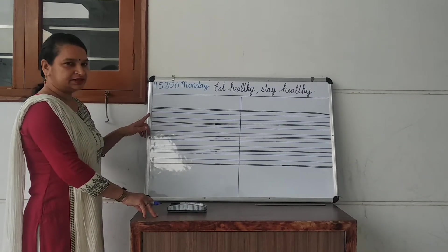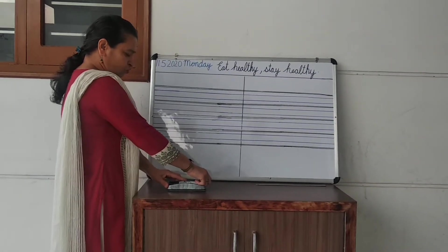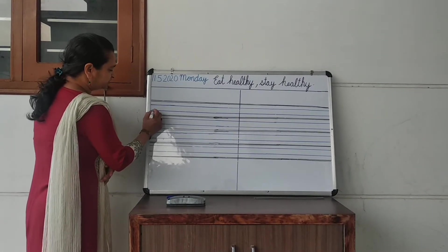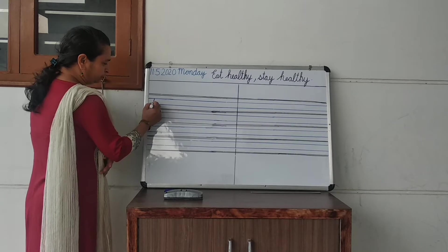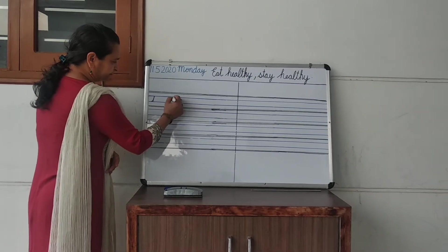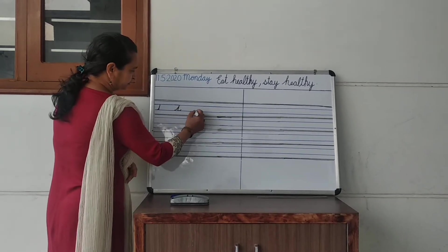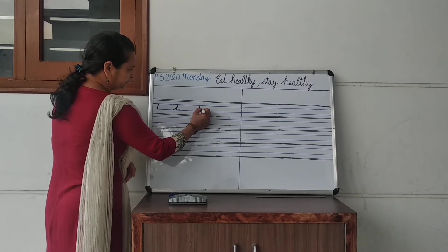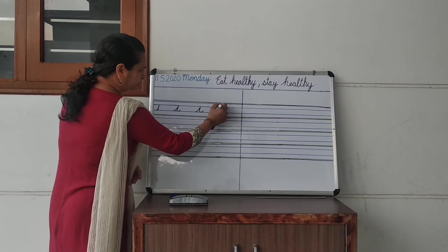In this class I will teach you the formation of letters i to p. We start with letter i. First step: start from the second blue line. Second step: go to the first line, then make a small turn. Third step completed, and fourth step: put a dot on top. That's i.